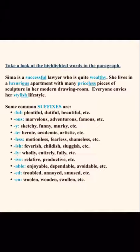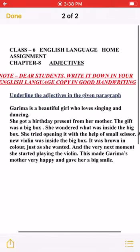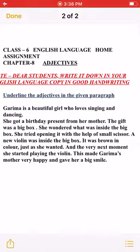Now for your homework. First, underline the adjectives in the given paragraph — write this in your English Language copy in very good handwriting. This is not in your book. The paragraph: 'Garima is a beautiful girl who loves singing and dancing. She got a birthday present from her mother. The gift was a big box. She wondered what was inside the big box. She tried opening it with the help of small scissors. A new violin was inside the big box. It was brown in color, just as she wanted. The very next moment she started playing the violin, which made Garima's mother very happy and gave her a big smile.' Find and underline all the adjectives describing nouns or pronouns.